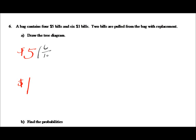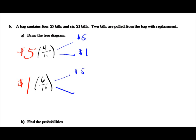There are ten bills altogether. Four out of ten is the probability of getting a five, because there are four five dollar bills. And six out of ten is the probability of getting a one dollar bill, because there are six of them. Since we put it back in, the second time through we could get either a five or a one. The probabilities are six out of ten for ones and four out of ten for fives.